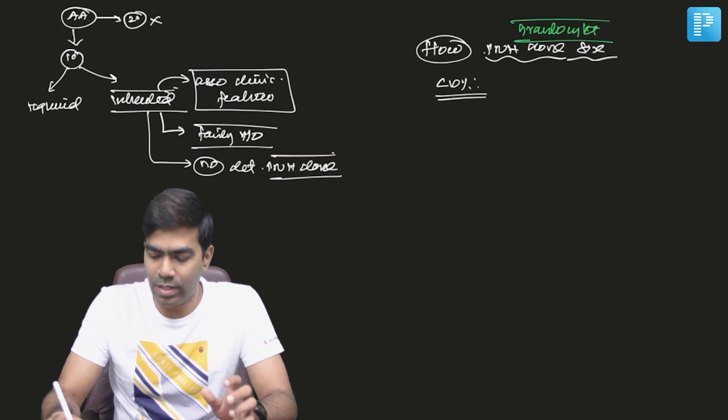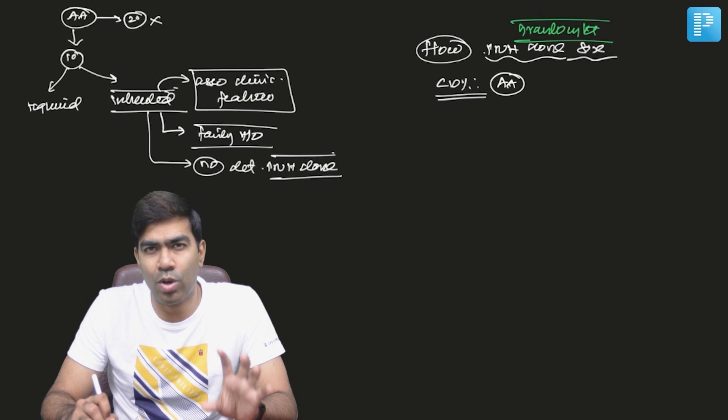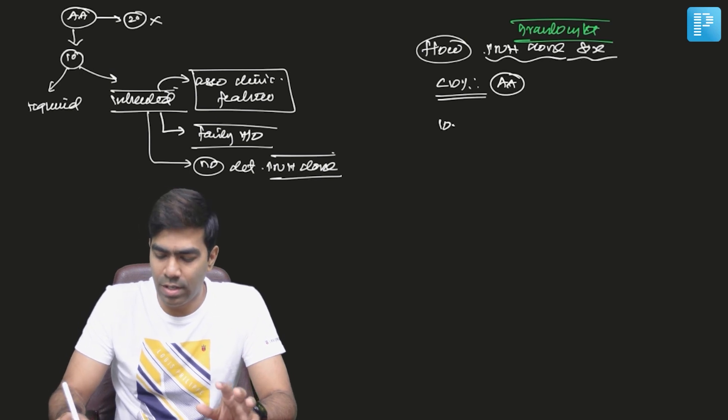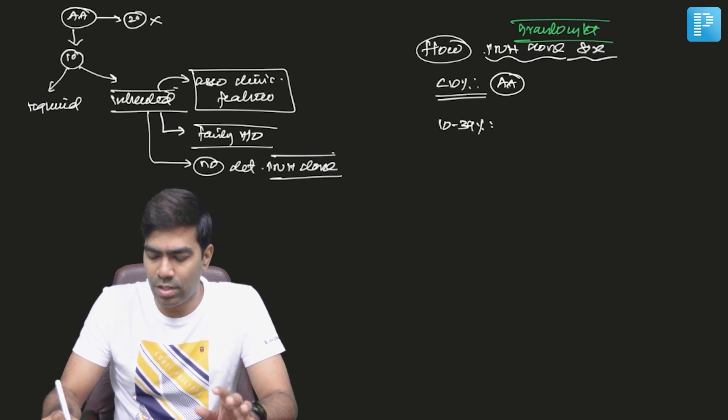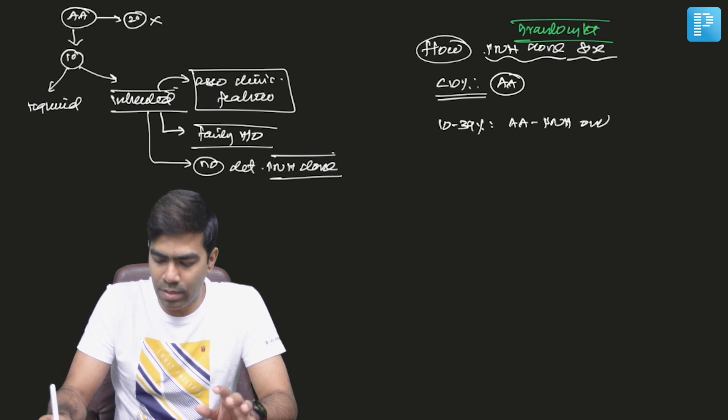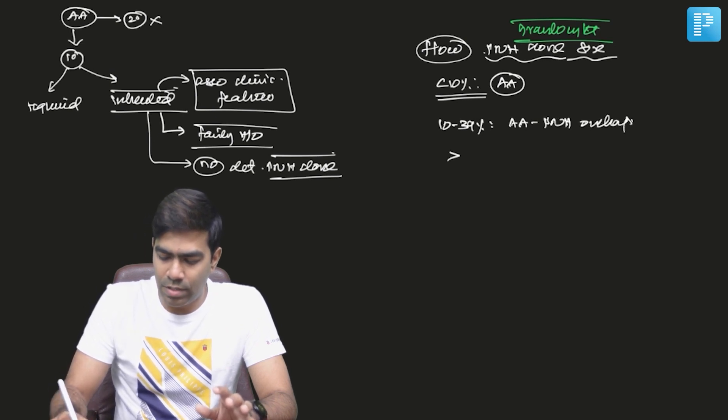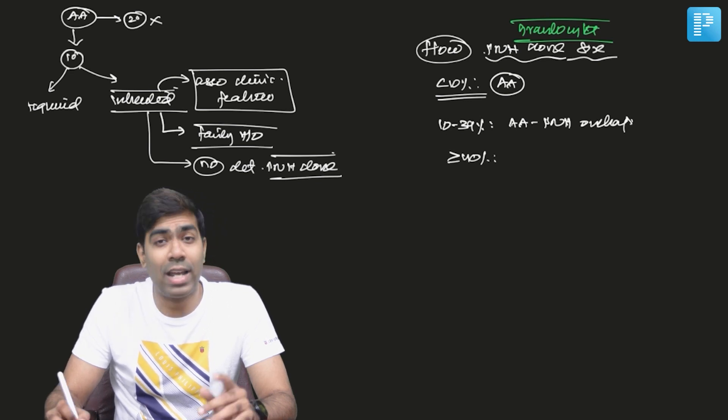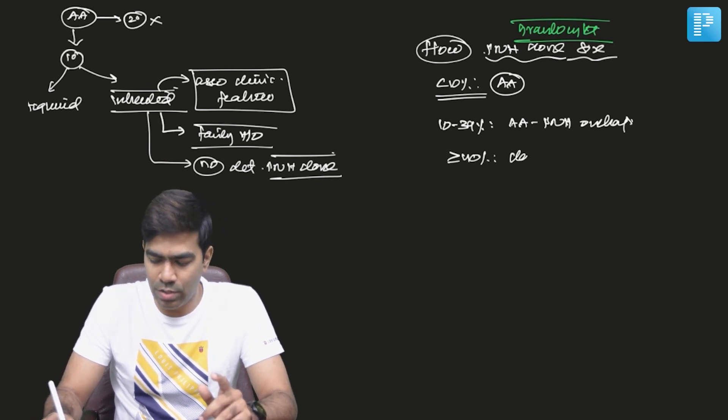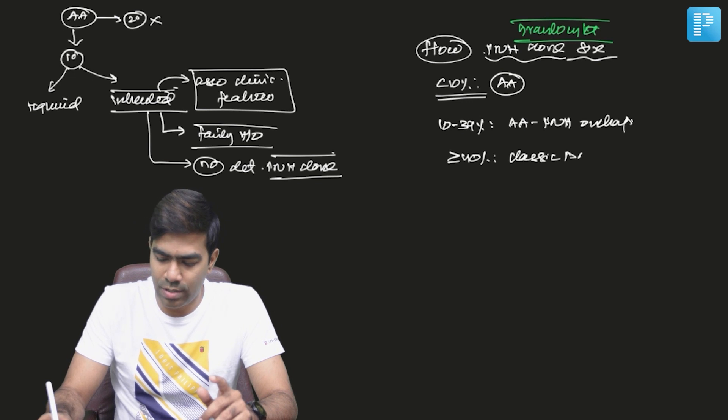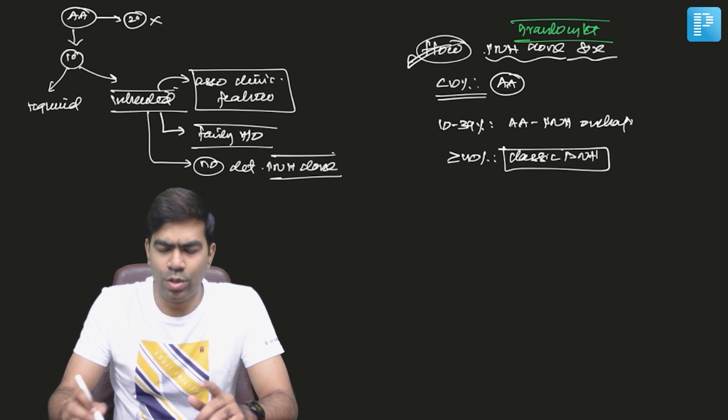If the size of the PNH clone is less than 10%, then it probably indicates a pure aplastic anemia. If it's in the 10 to 39% range, then it probably tells you it's an aplastic anemia-PNH overlap. And if it is more than 40% and up to 99%, then it probably tells you it's a classic PNH.